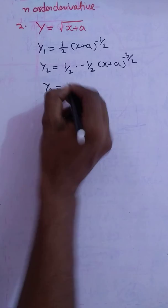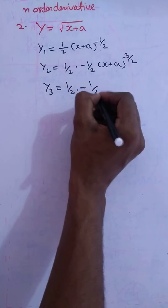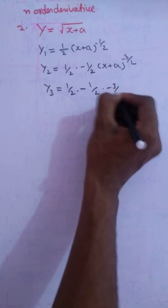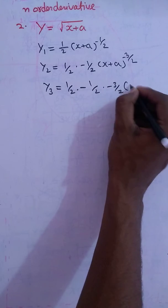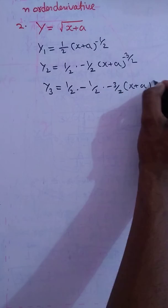Like this, y3 will be 1 by 2 into minus 1 by 2 into minus 3 by 2, and (x plus a) to the power minus 5 by 2.